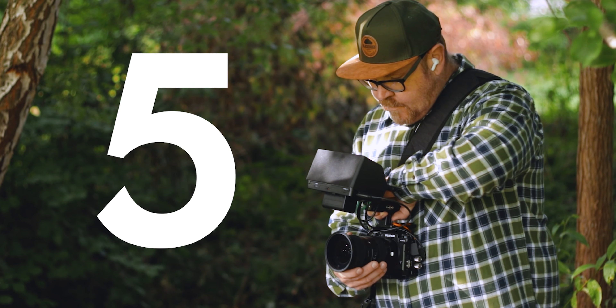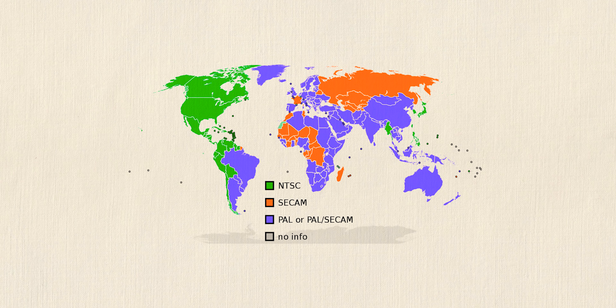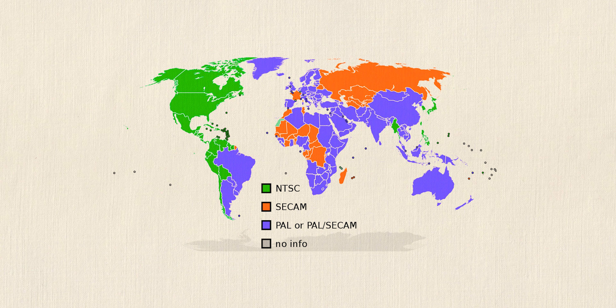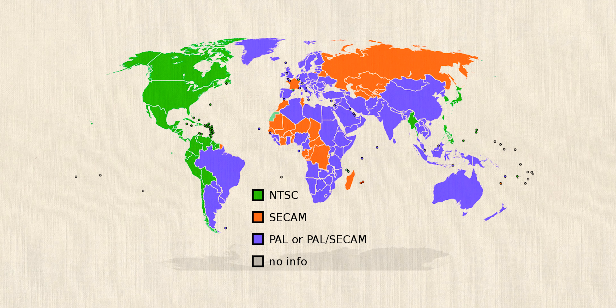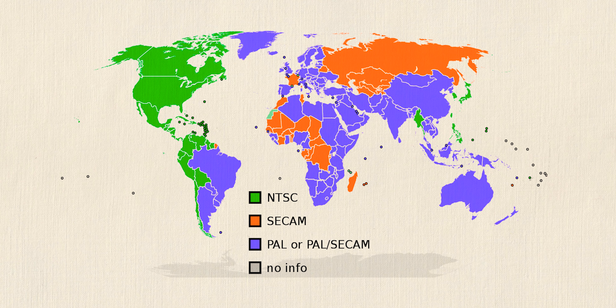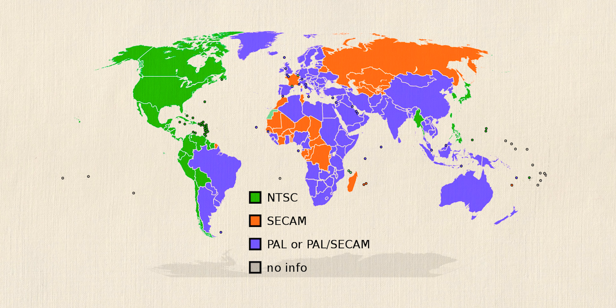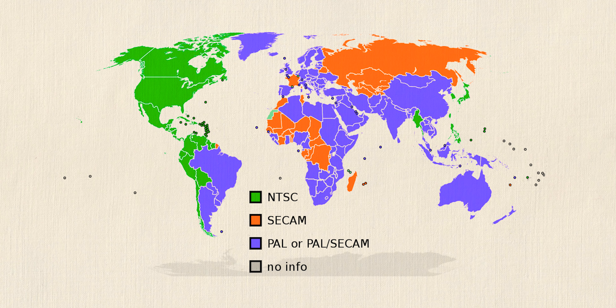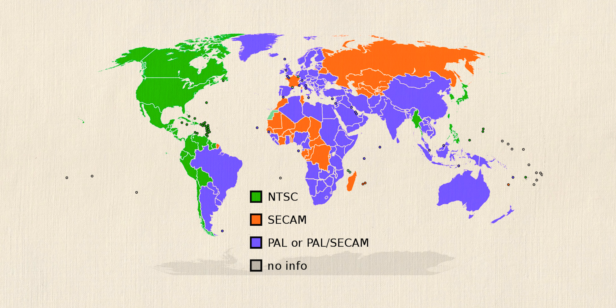It all starts in camera. Shooting with the correct frame rate for your current location is the first step. I know I've shown this map before, but pause and see if you can locate your country or region. Green areas are 24 FPS and the orange and purple are 25 FPS.